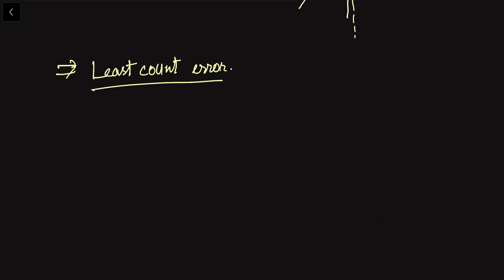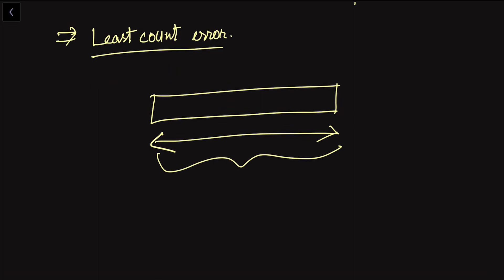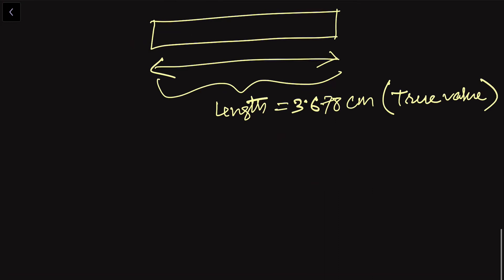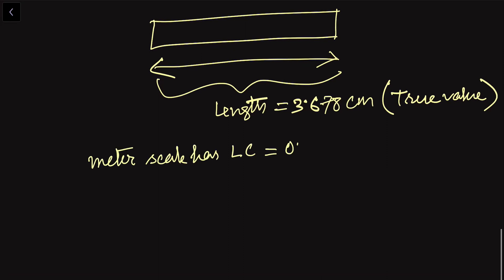Now we will discuss least count error. This error is associated with the least count of the measuring device — the smallest value that device can measure. For a meter scale, the least count is 0.1 centimeters or 1 millimeter. So if the true length of a rod is 3.678 centimeters, a meter scale can only measure up to the first decimal place.